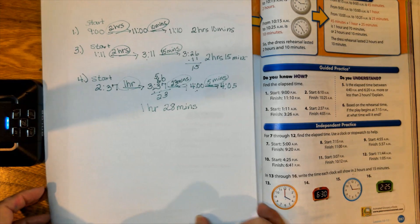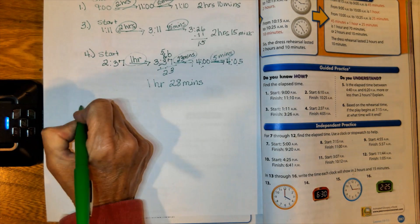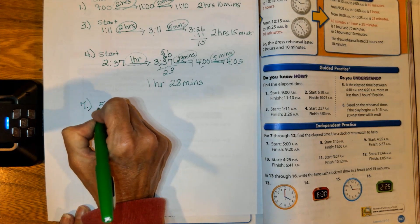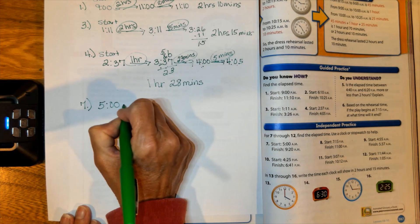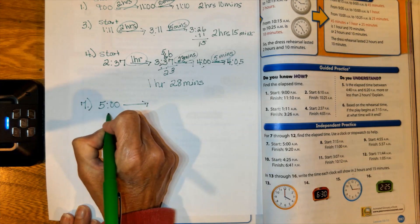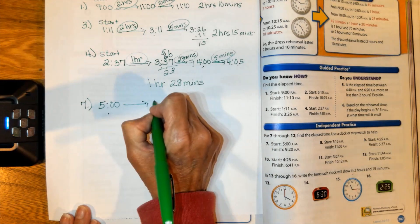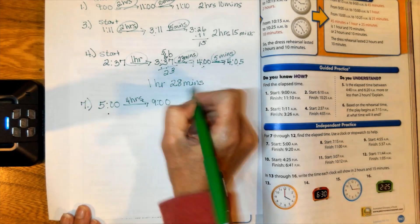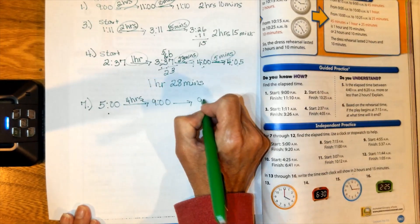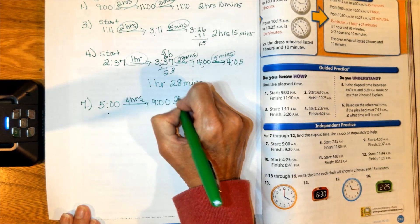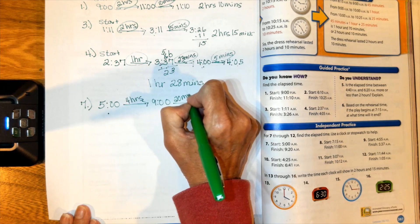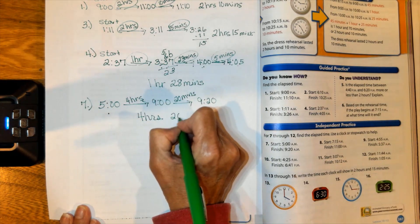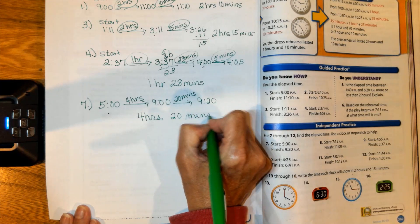Let's see how you did on those three. Number 7 was a pretty easy one. Let's try to practice this process: we can go from 5 o'clock to 9 o'clock, which is 4 hours. Then 9 o'clock to 9:20 is 20 minutes. Put those together for an answer of 4 hours and 20 minutes.